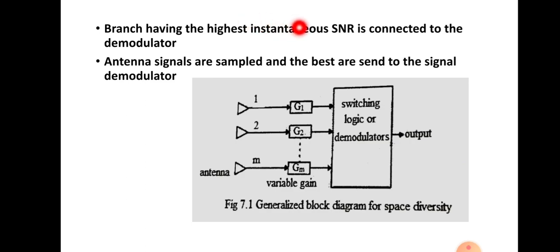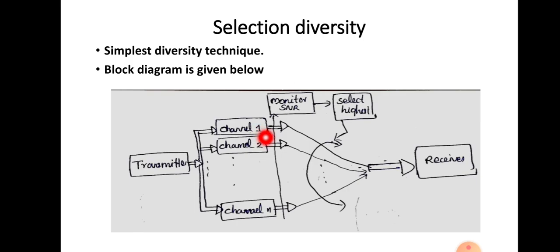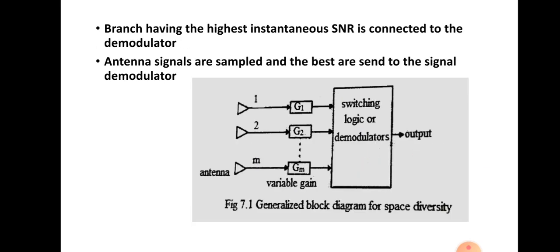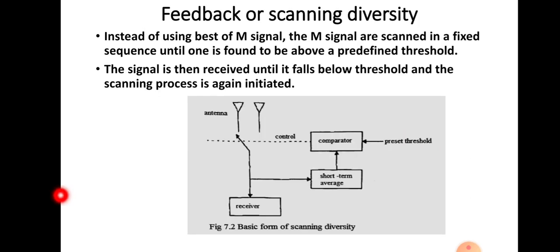The branch having the highest instantaneous signal-to-noise ratio is connected to the demodulator. The antenna signals are sampled, and the highest SNR signal is given to the demodulator at the receiver side. The values g₁, g₂, etc. represent the gain of each channel. After selecting the highest SNR signal from the multipath channel, that signal alone is demodulated and sent to the output.